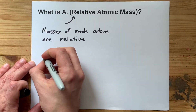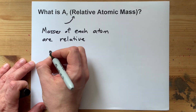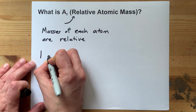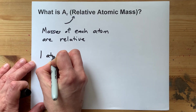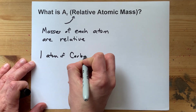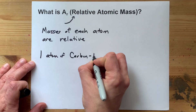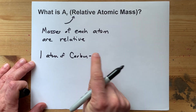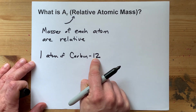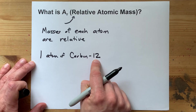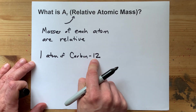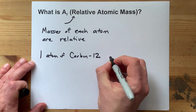Chemists have said that one atom of carbon-12 — that's a carbon atom with a mass number of exactly 12.